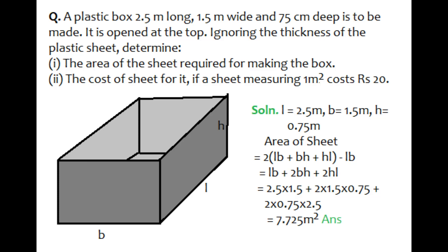For the first part, from the question we can say that length L is equal to 2.5 meter, breadth is 1.5 meter, and height is 0.75 meter. Since we have to find the area of the sheet, and the top of the box is open, one face of the rectangle will be subtracted from the actual surface area of the cuboid. So the top surface, which is length into breadth, will be subtracted as shown in the figure.